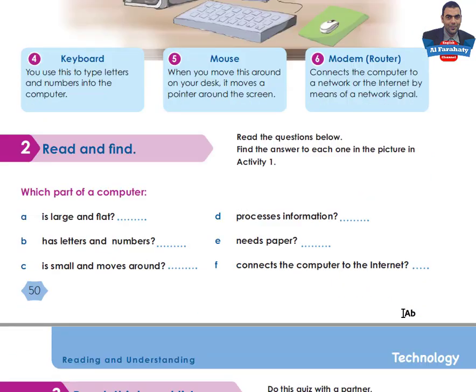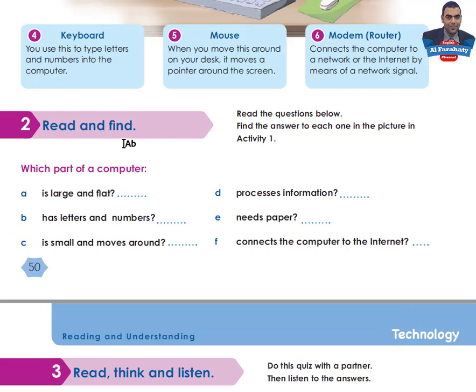Let's go to Activity 2: Read and Find. Read the questions below and find the answer to each one in the picture in Activity 1. Which part of a computer is large and flat? Has letters and numbers? Is small and moves around? Processes information? Needs paper? Connects the computer to the internet? Write the name of each part next to the question. Take your time, then come back to check your answers.